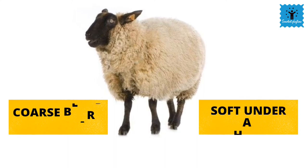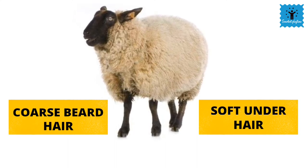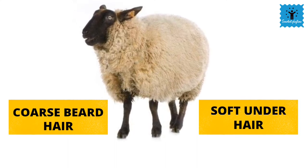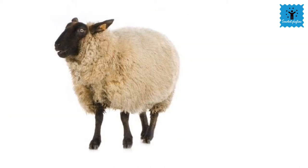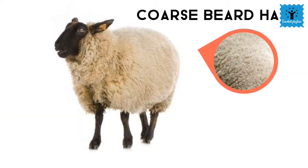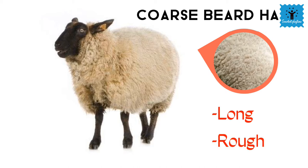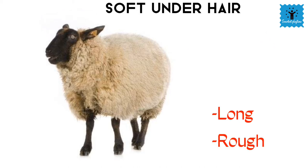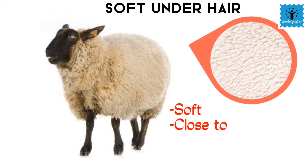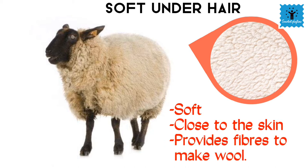Sheep has two types of hair: coarse beard hair and fine soft under-hair. Coarse hair is the outer covering of the sheep — it is long and rough. Soft under-hair is found very close to the skin of the sheep; it is also known as fleece, and this fleece provides fibers for making wool.